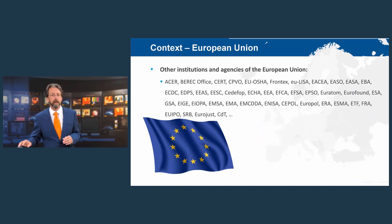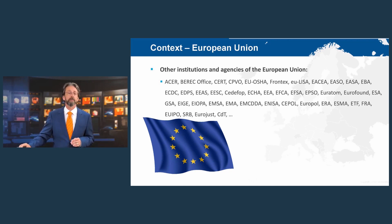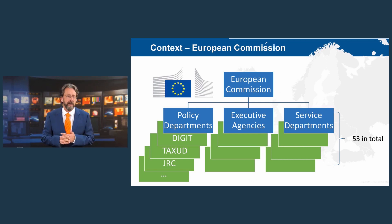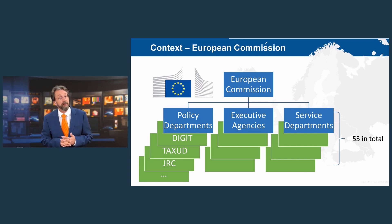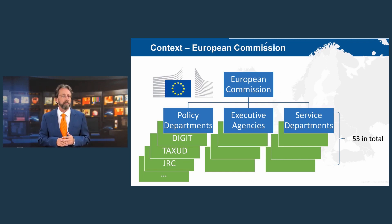If we zoom in on the European Union's agencies, you'll see many like Euratom and Europol that support the workings of the European Union. But the biggest one of all is the European Commission, and it's the most interesting because that's where we find the birthplace of PM2. The European Commission has 28 commissioners — one for each country — with policy departments, executive agencies, and service departments: 53 departments in total, employing roughly 32,000 people in Brussels, Luxembourg, and other places.